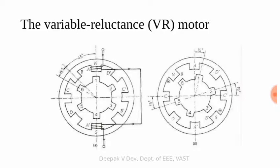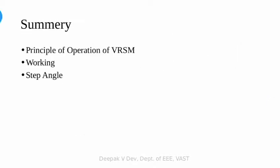If we change the number of poles — for example, if the stator has 6 poles — we can calculate a different step angle using the same formula, which would give 15 degrees. So in this video we studied about the principle of operation of variable reluctance stepper motor, its working, and the formula for calculating the step angle. I hope all of you understood these topics. Thank you.